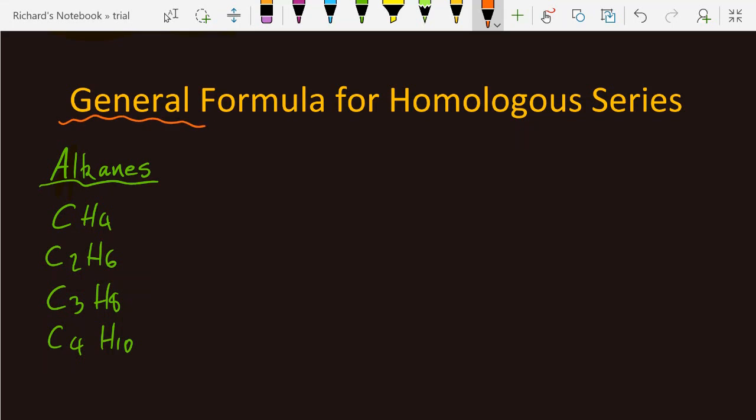I wouldn't advise learning by rote these general formulas. You should be able to work them out. A homologous series is a list of organic chemicals where each one differs by CH2 and they have the same functional group as well.